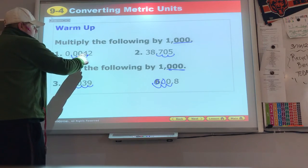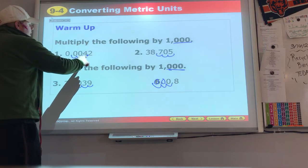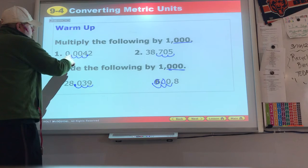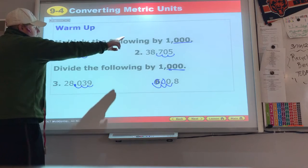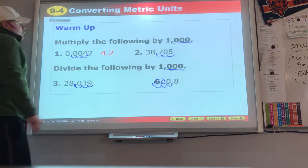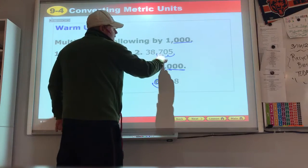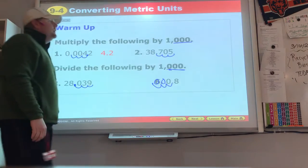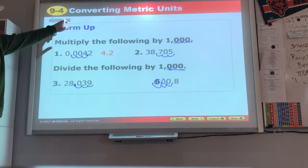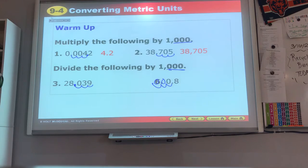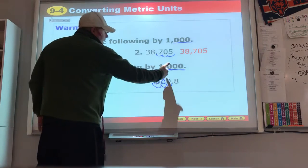You multiply, you start at that decimal and you make the number bigger. One, two, three to the right because there's three zeros and the answer is 4.2. Start at the decimal, three zeros, one, two, three spots to the right. Thirty-eight thousand seven hundred and five, the number's bigger.